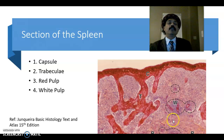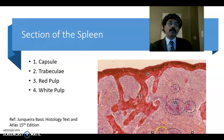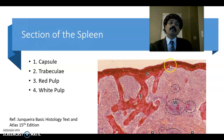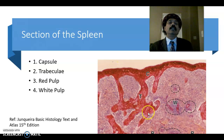Sinusoids and lymphatic cords form the red pulp; the lymphatic nodule and the periarterial lymphatic sheath with the central artery form the white pulp. The capsule is thick, contains myofibroblasts, and outside the capsule it is lined by the mesothelium, or visceral peritoneum. The spleen is located in the left upper quadrant of the abdomen.